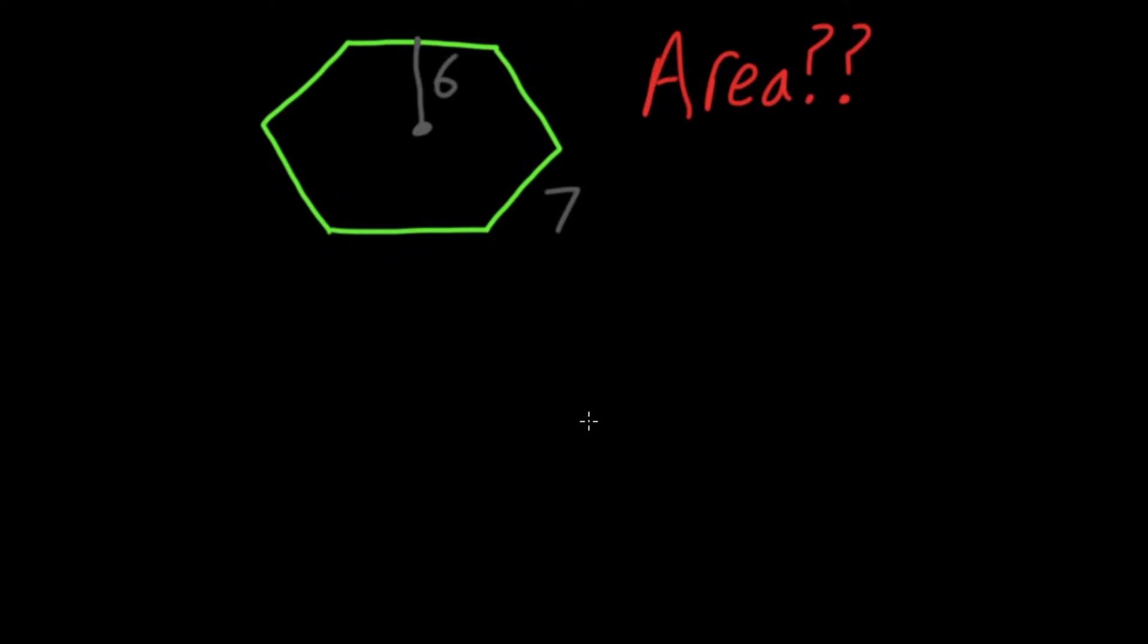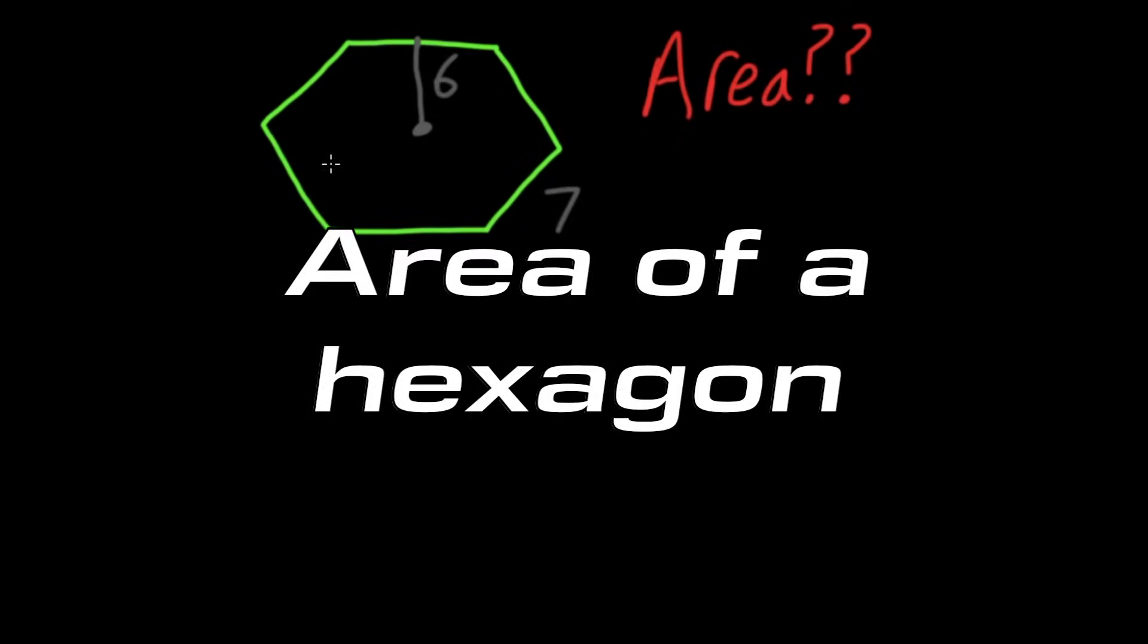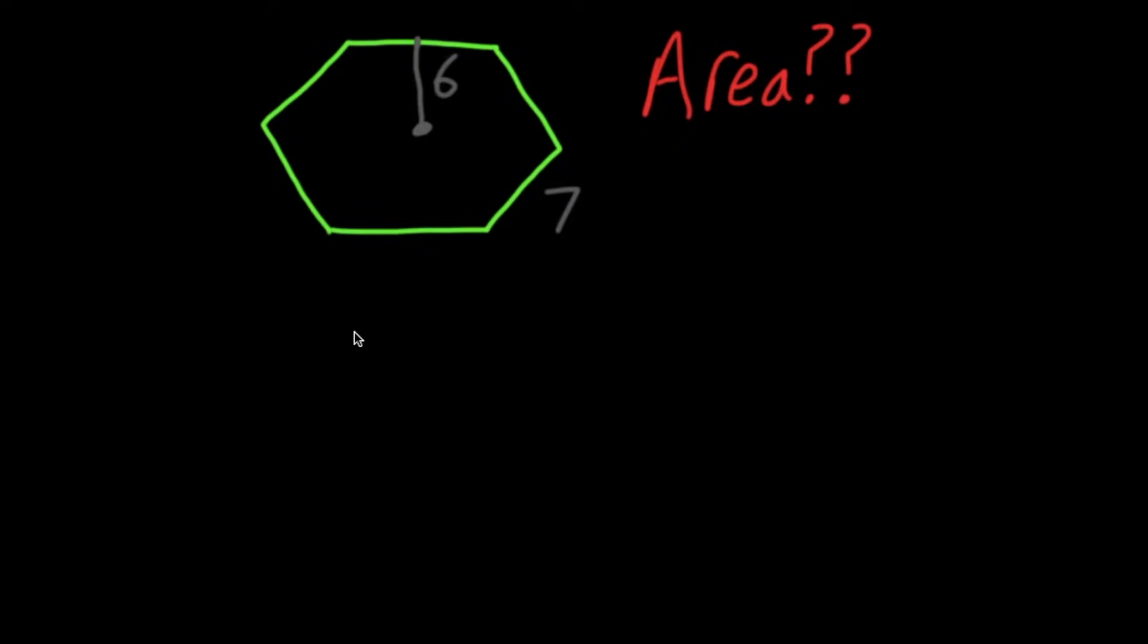Hello and welcome. In this video, we're going to look at how to find the area of a regular hexagon. Here we have our hexagon, and we know it's a hexagon because it has six sides.